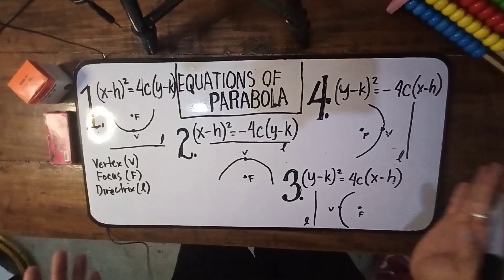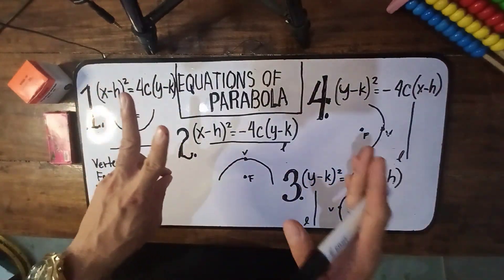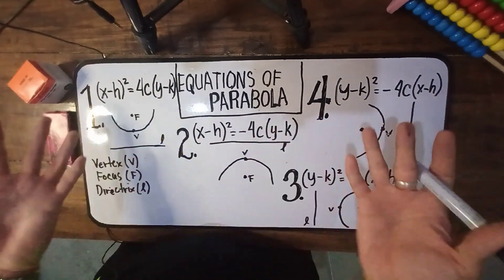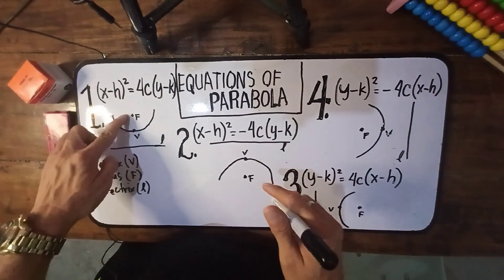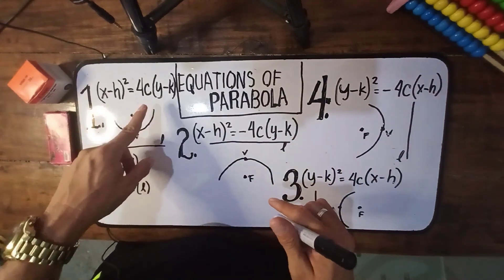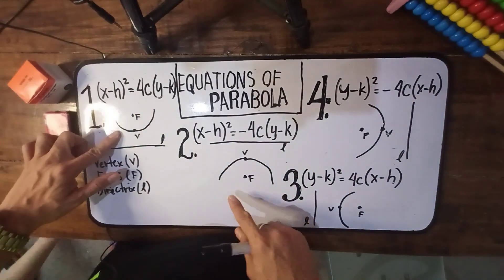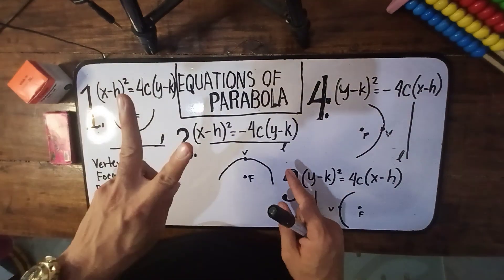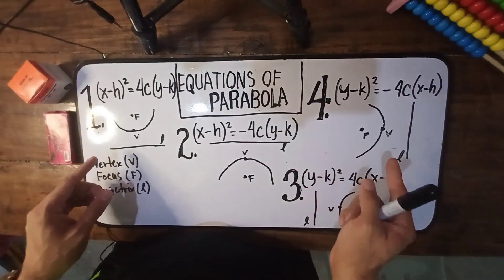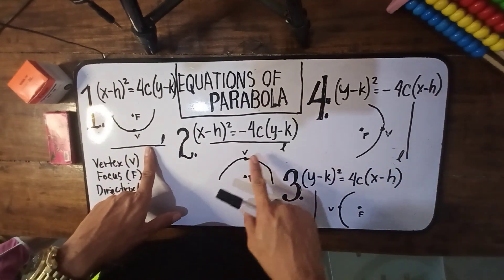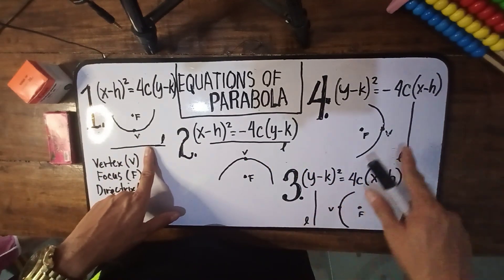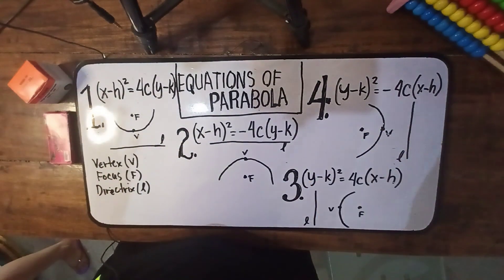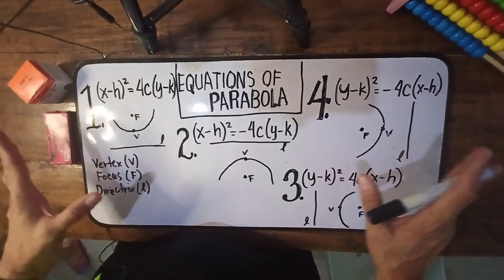There are two things that you need to remember in order for you to identify the equation of the parabola easily. Number one, ang focus ay laging nasa loob lamang ng parabola — so ang focus ay laging nasa loob. Number two, yung directrix ay laging nasa opposite side ng parabola — ito yung mga directrix natin, lagi siyang nasa opposite side. These concepts will help you easily identify kung ano equation yung gagamitin natin.